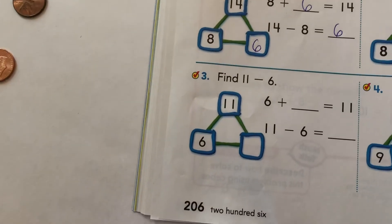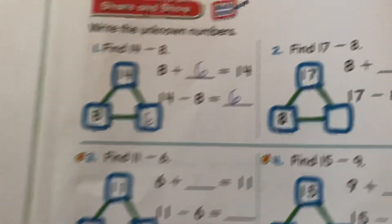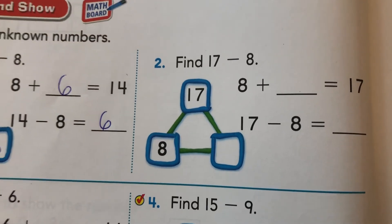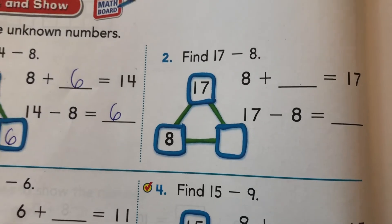Oh. And so they'll just count out, say, for number 2, they'd count out 17 pennies and then take 8 pennies away to see what the other part is. Yep. I got it. Gwen, you're a genius. Haha.